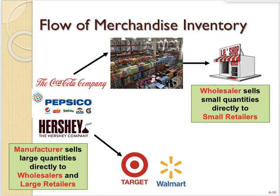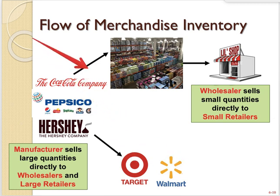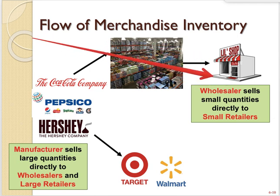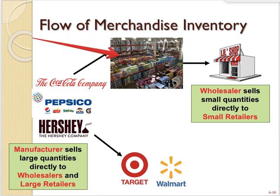The overall flow looks like this: manufacturers like Coke, Pepsi, and Hershey make products and sell mostly to large retailers like Target and Walmart, or to wholesalers. They don't have time to sell small quantities to little corner stores or boutiques. Instead, they sell to wholesalers, and the wholesalers sell to the smaller shops. That's why wholesalers exist — they're necessary to supply the smaller retailers. And that covers all of our merchandising company types.